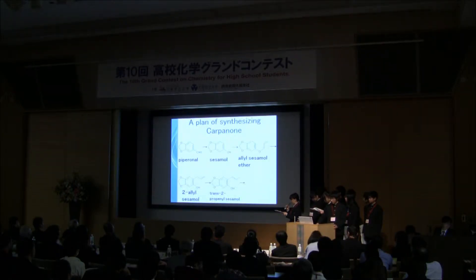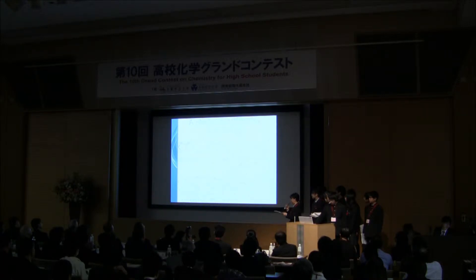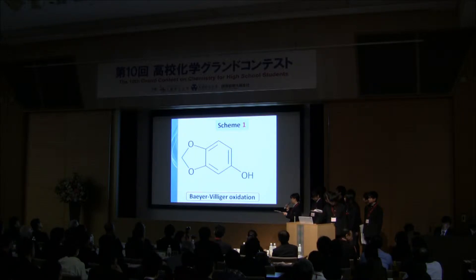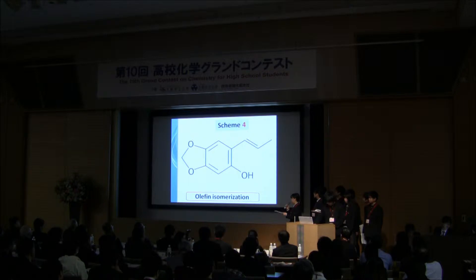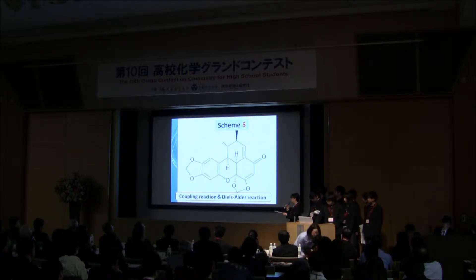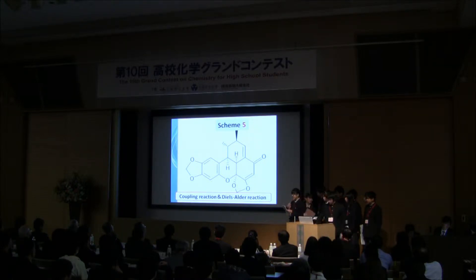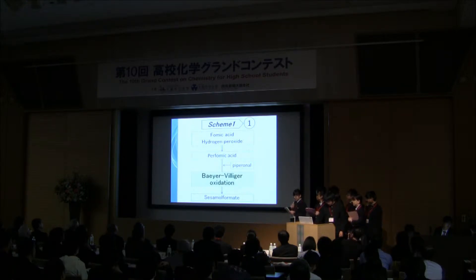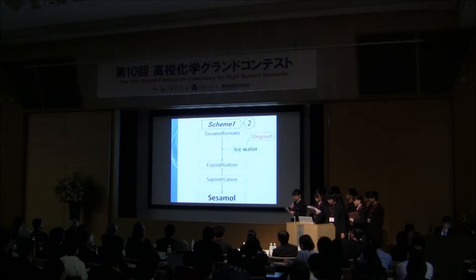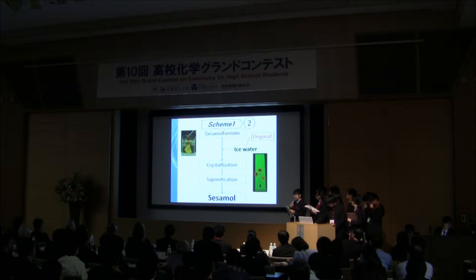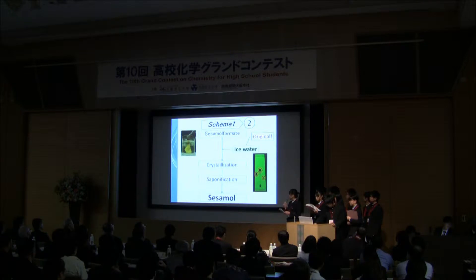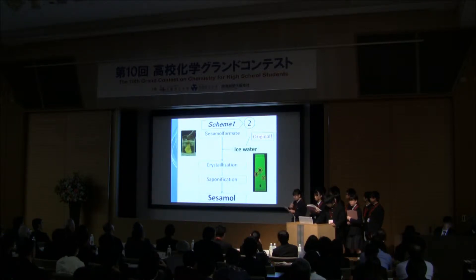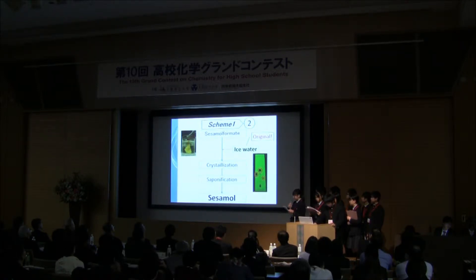With a lot of effort, we made a plan of synthesizing carbanol consisting of five schemes. At scheme 1, we employed Baeyer-Villiger oxidation with performic acid. We obtained sesamol formate. We turned this reaction mixture into ice water, and the sesamol formate crystallized. We then purified this using a solvent evaporator, and genuine sesamol was obtained by extraction and recrystallization, in 42% yield.